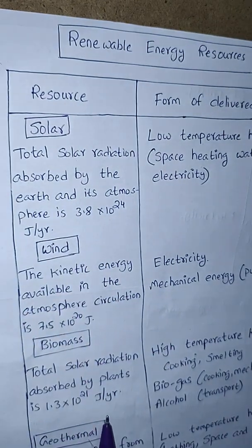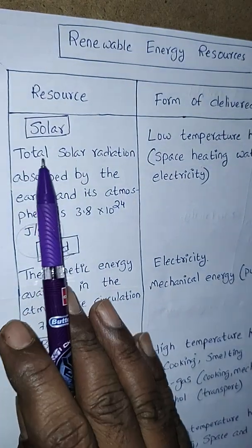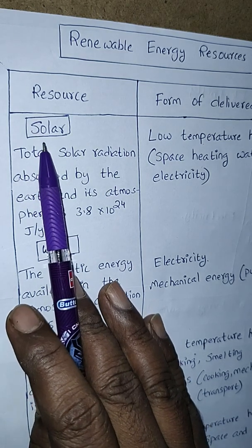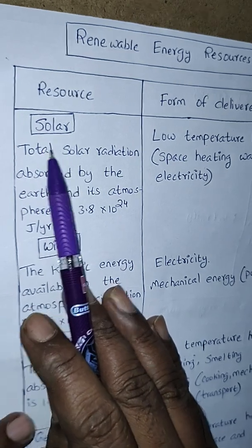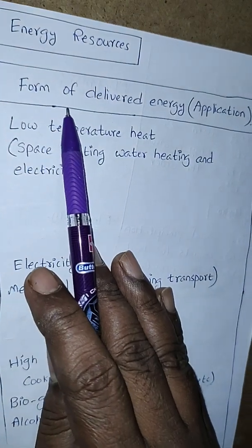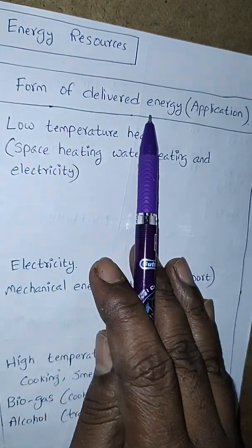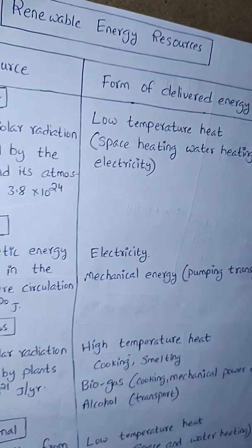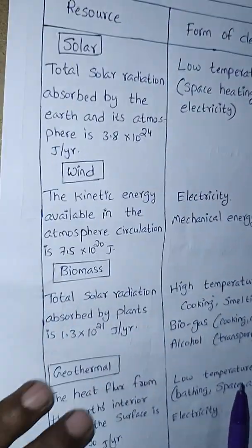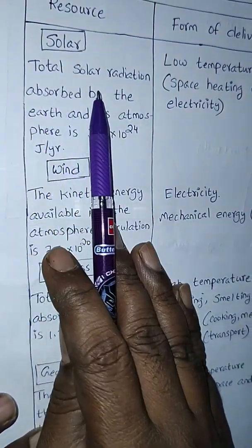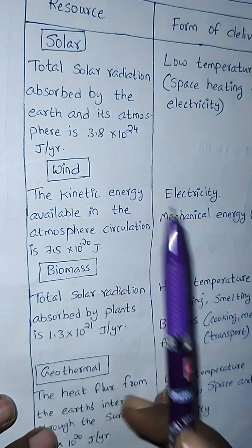Now we will start discussing. You can see the resources here. We will start with solar. First we will come to know what the resource is, and next we will discuss its applications — the form of delivered energy, that is the application of the related resource.